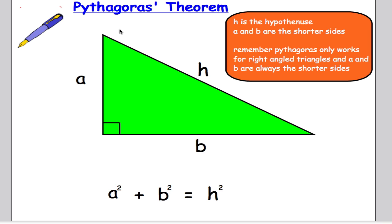What Pythagoras worked out was that given any right angle triangle whatsoever, if we square the two short sides and add them together, we will always get the longest side squared. So in other words, you end up with something like this: a squared plus b squared equals h squared.